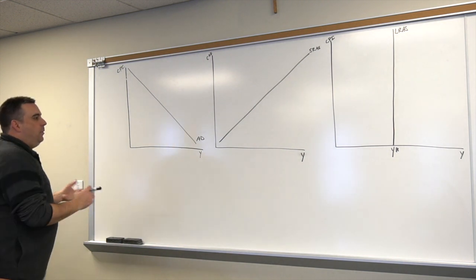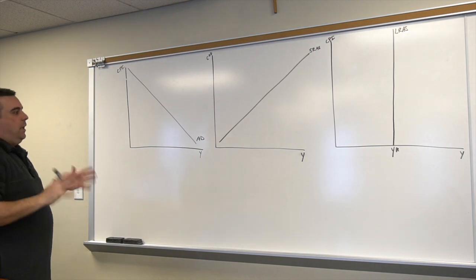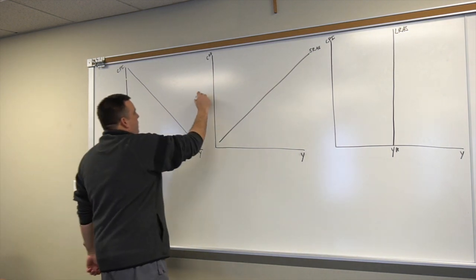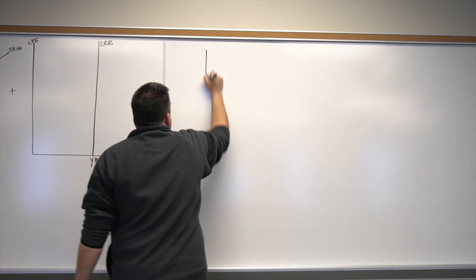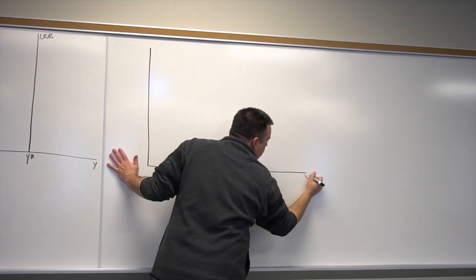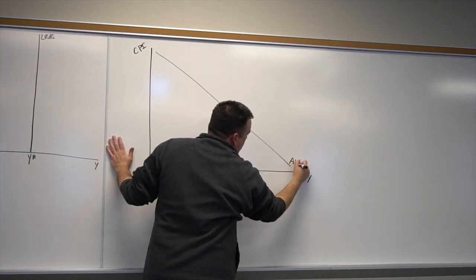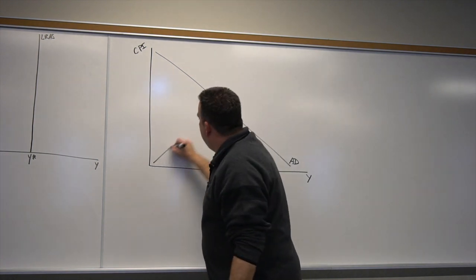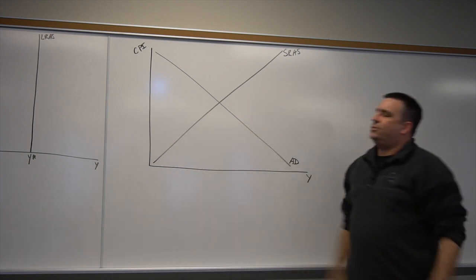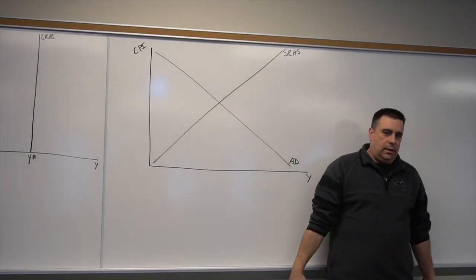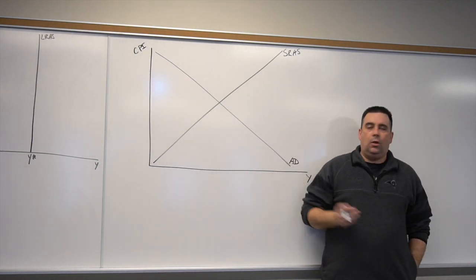Now we've got these three graphs that are all represented on the same axes, and we want to be able to effectively combine them. Let's do the easy part first. Let me go ahead and make my graph here. The easy part is the part that looks like our micro model. There's my aggregate demand, there's my aggregate supply in the short run, and they make an X just like my model did in Econ 1900. We've got to figure out what to do with long-run aggregate supply.